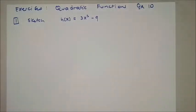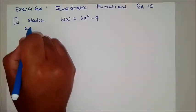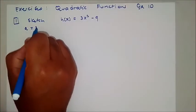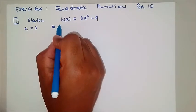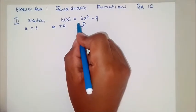This is the exercise from the previous video. In this video, the first question requests us to sketch H of x. When sketching quadratic parabolic functions, we need to look at A. Here A equals 3, and we note that A is positive, so our function will open upward.